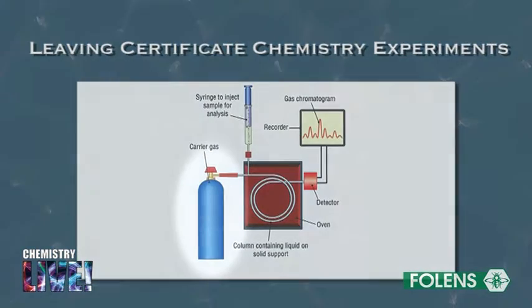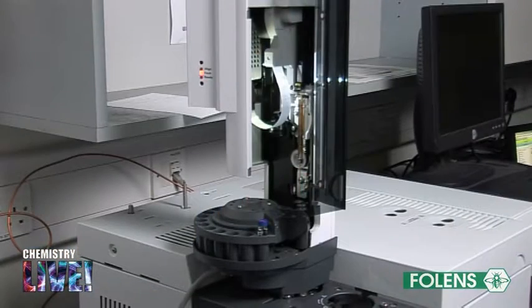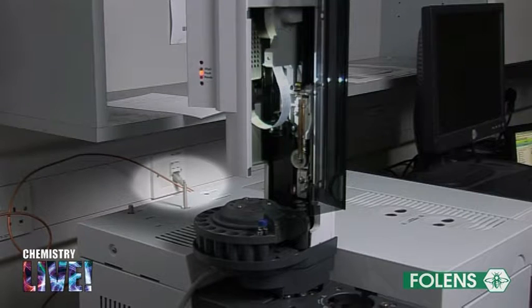The cylinder of carrier gas shown in the diagram is usually located outside the building and is fed into the gas chromatography instrument at this inlet.